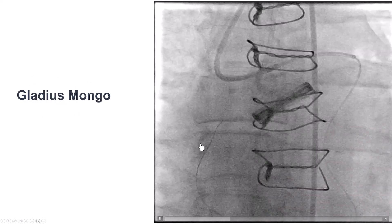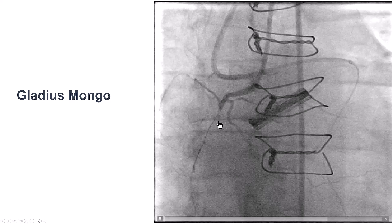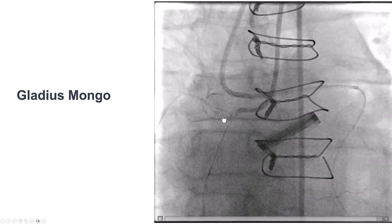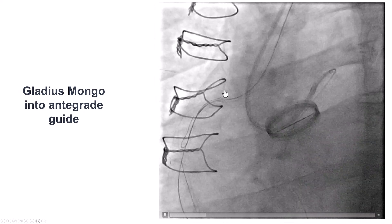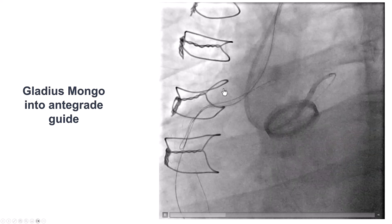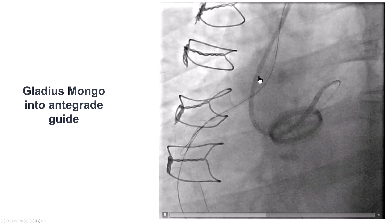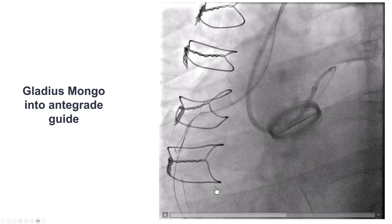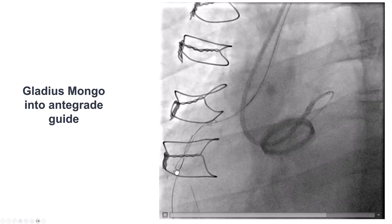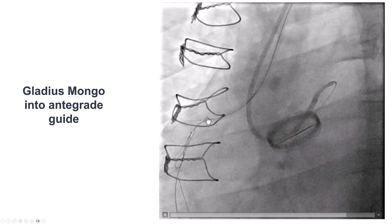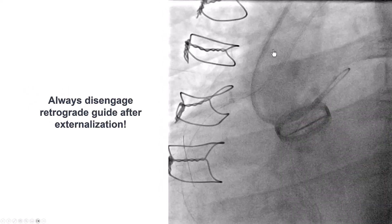Now we're well-positioned for crossing the CTO. This is a retrograde Gladius Mongo guide wire that is advanced, very close to the proximal cap. We were able to cross retrograde true-to-true into the antegrade guide catheter, which significantly facilitates externalizing a guide wire and treating the CTO. For relatively short CTOs, true-to-true crossing from the distal true lumen to the proximal true lumen can be feasible, and with multiple attempts one may be able to advance the guide wire into the antegrade guide catheter.